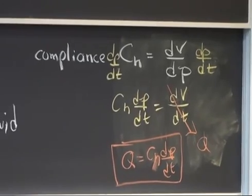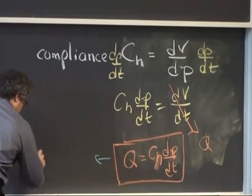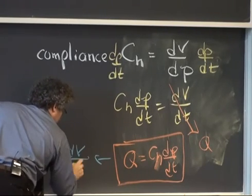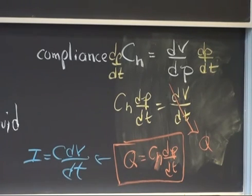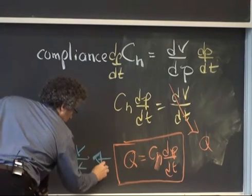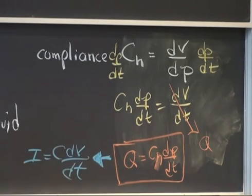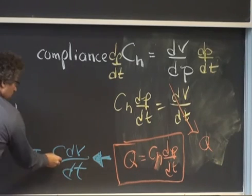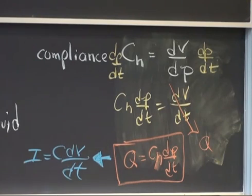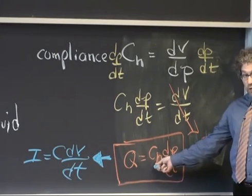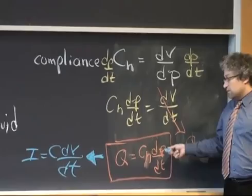And again, this is designed to be put in a form that is reminiscent of this relation, which is the relation for the current of a capacitor. So the current through a resistor is given by the voltage divided by the resistance. The current through a capacitor is given by the capacitance times the time rate of change of the voltage. And we have hydraulic analogies. The volumetric flow rate through a hydraulic resistor is given by the pressure difference divided by the hydraulic resistance. And the volumetric flux through a system that has compliance is given by a hydraulic capacitance times the time rate of change of the pressure.